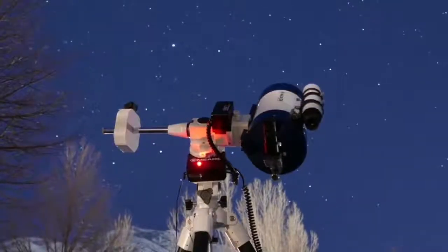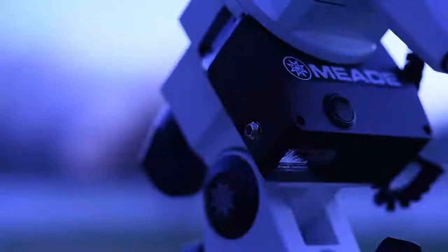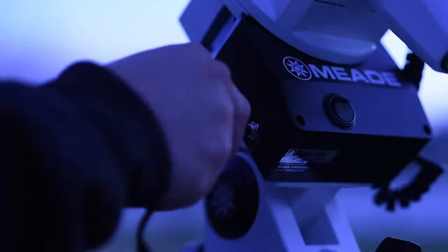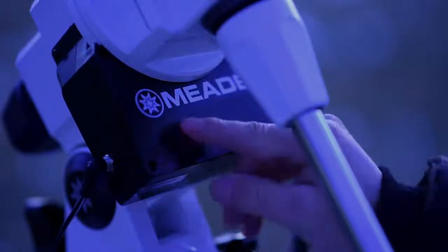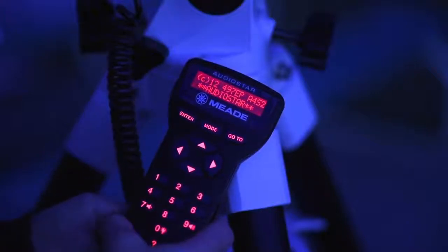Now that you're polar aligned, you are ready to align the AudioStar handbox. First thing you will want to do is switch your telescope on. Make sure you have properly connected power to your LX85 as shown in how to set up your LX85 video. Turn the mount on. A red LED on the rocker switch will light up to indicate that the mount is now powered on. AudioStar will beep and the display screen will activate.